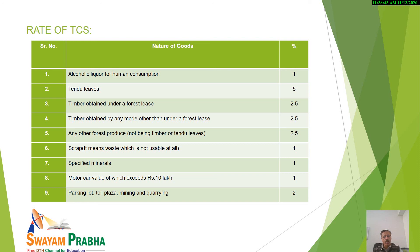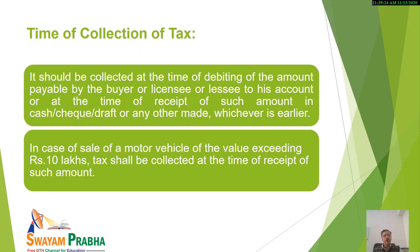What is the provision if PAN is not submitted? The rate applicable will be twice the specified TCS rate. For example, where the rate is 2%, 1%, or 2.5%, the rate applicable will be double of that or 5%, whichever is higher. So it is always advisable that where TCS provisions are applicable, furnish your PAN number, otherwise TCS will be collected at a higher rate.